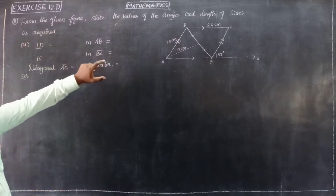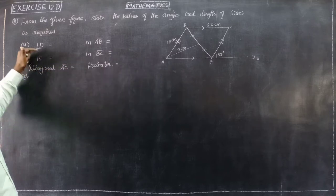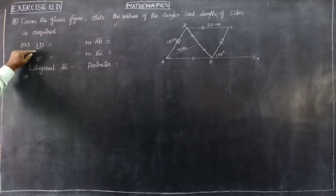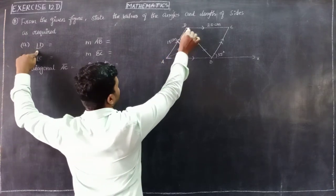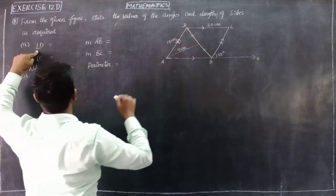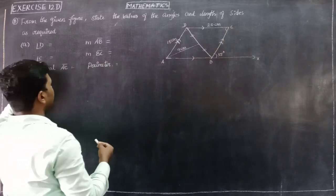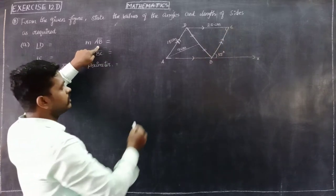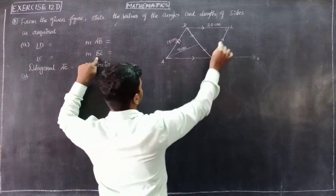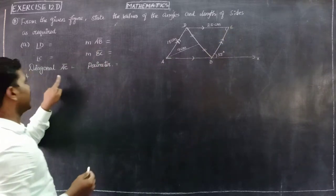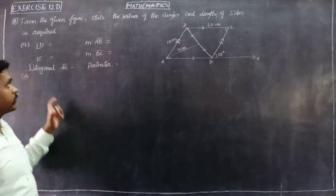So one thing you can do is look at the angle data on the sides. What is the angle data? First angle D, and angle C, and the measure of AB, BC, diagonal AC, and perimeter.